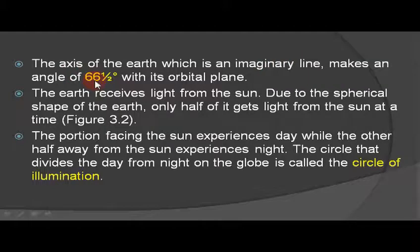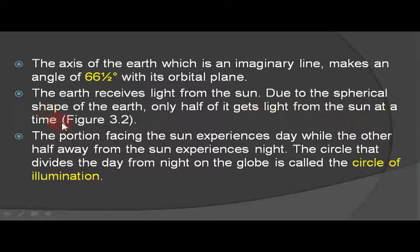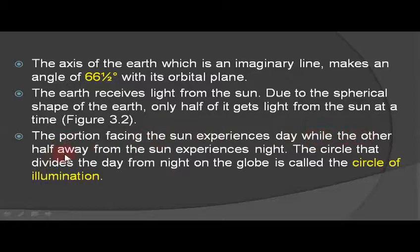The earth receives light from the sun. Due to the spherical shape of the earth, only half of it gets light from the sun at a time, as you can see in figure 3.2. The earth has a spherical shape. The person facing the sun experiences day, while the other half away from the sun experiences night.